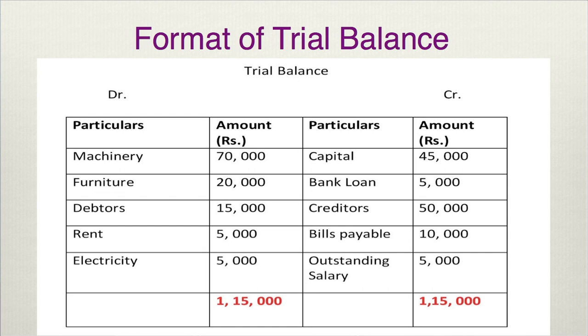Trial balance can be prepared in different formats — they are all very simple. In this particular format, we record the different ledgers on the debit side with their amount, and the credit ledger accounts on the credit side of the trial balance. The important point to be noticed is that the total figure of the debit column amount and the credit amount of the trial balance are the same. In this example with imaginary figures, the total figure is 1,15,000 on both the debit and credit sides, indicating that the trial balance is agreed.